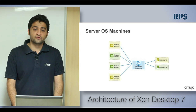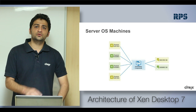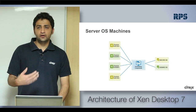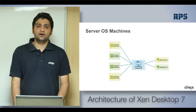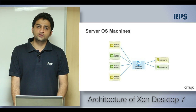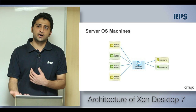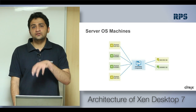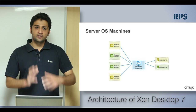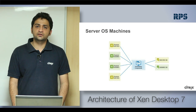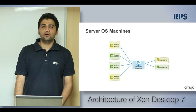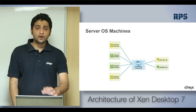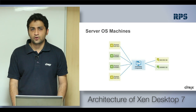You can publish server operating system machines. In previous versions there was a concept called hosted shared desktops, where 2008 R2 VMs running Remote Desktop Services were given to users who logged in through Citrix connections. You can do the same with XenDesktop components. There is no IMA anymore — it will all be based on FMA, the Flex Management Architecture. We'll look at the complete architecture later in the same module.